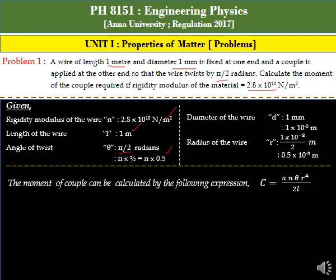The diameter D is related to radius by D = 2R, so R = D/2. The diameter of the wire is 1 millimeter, which we convert to meters: r = 0.5 × 10⁻³ meter.